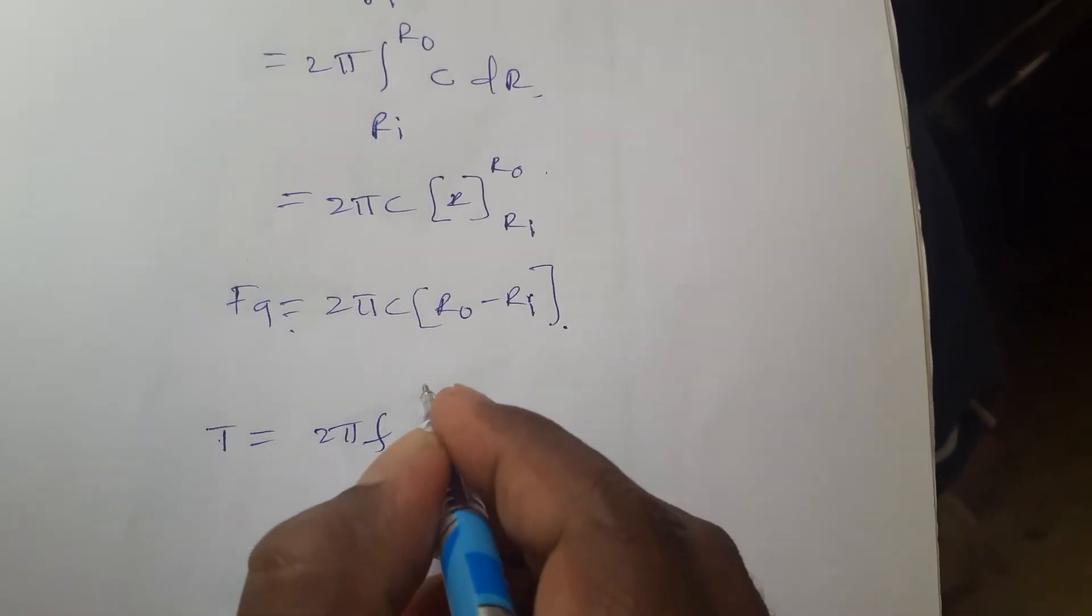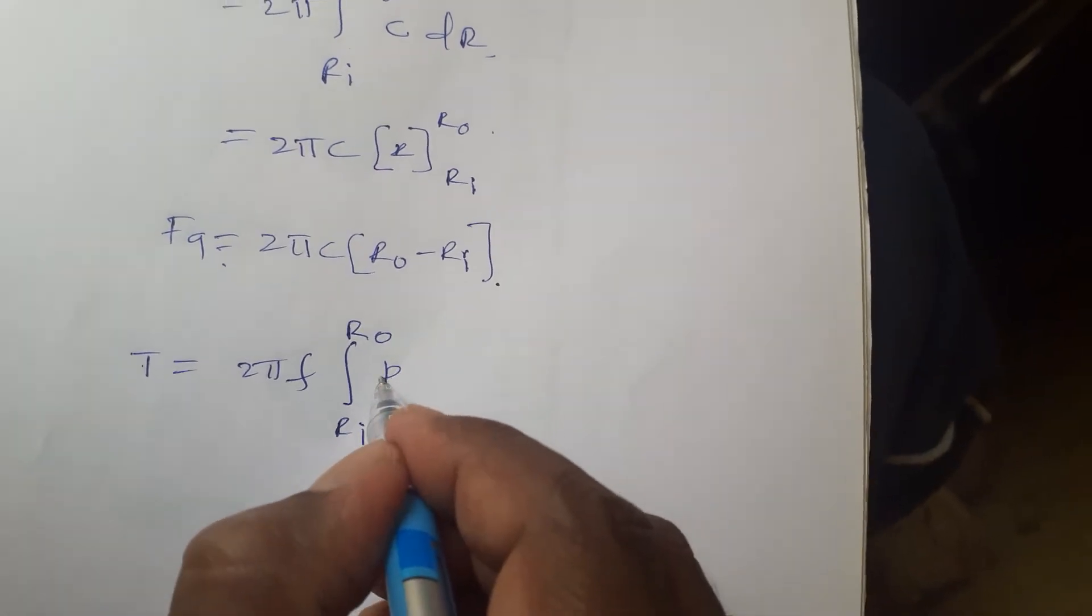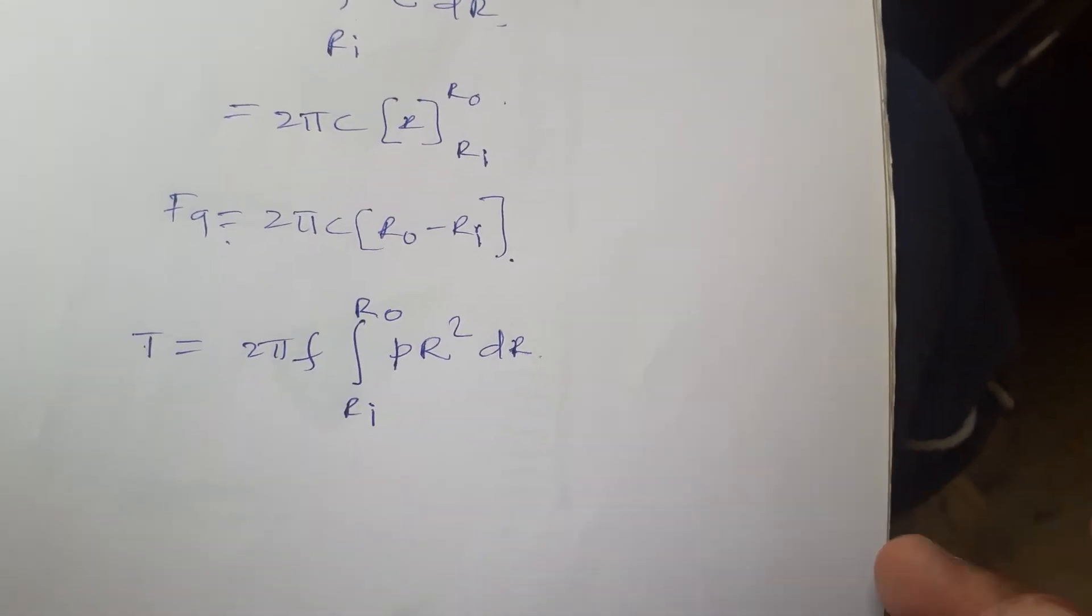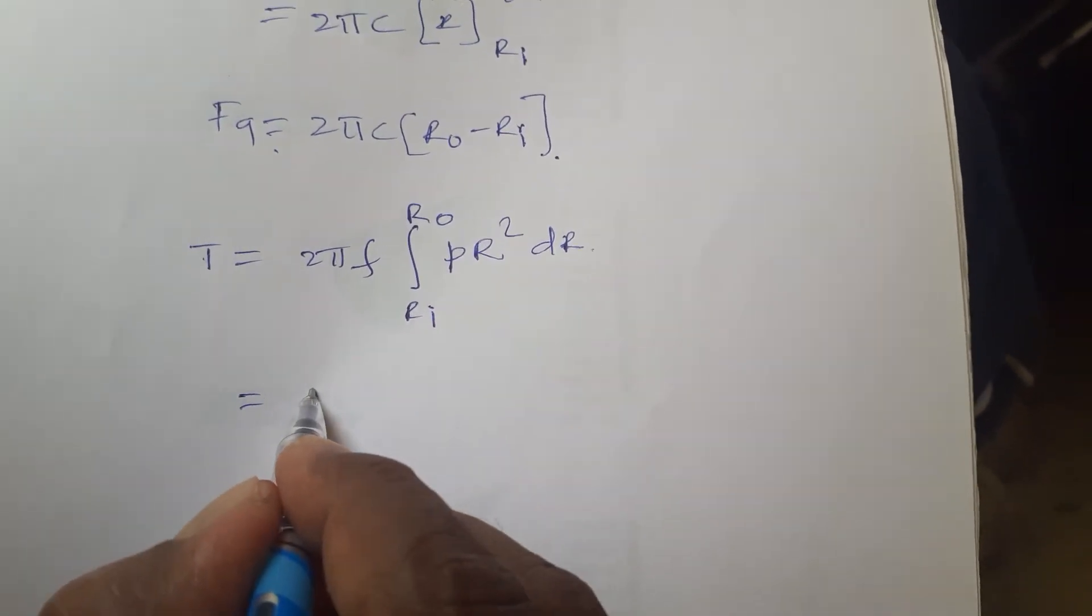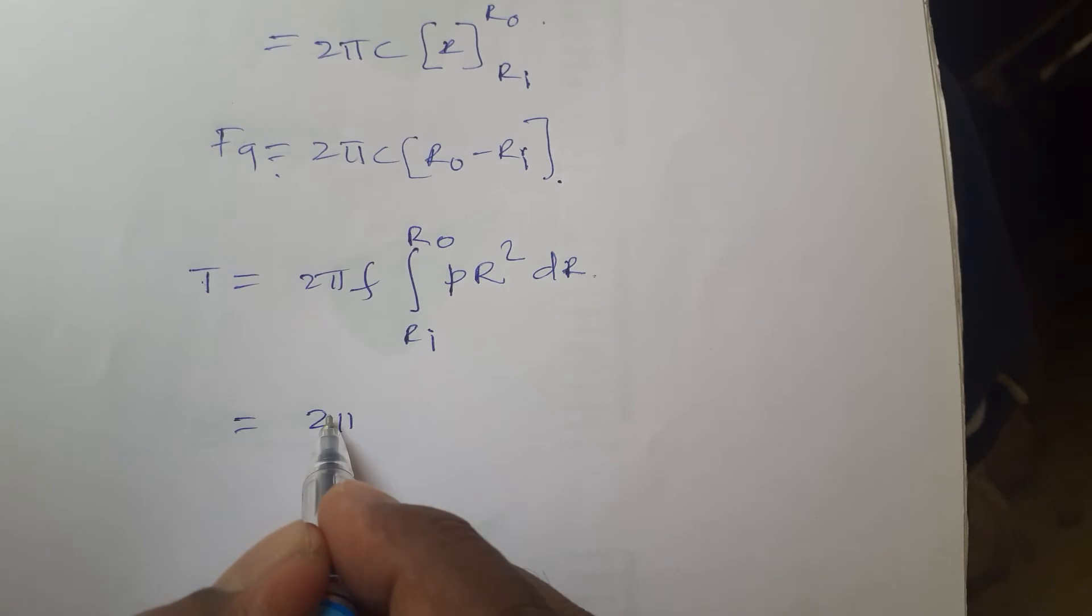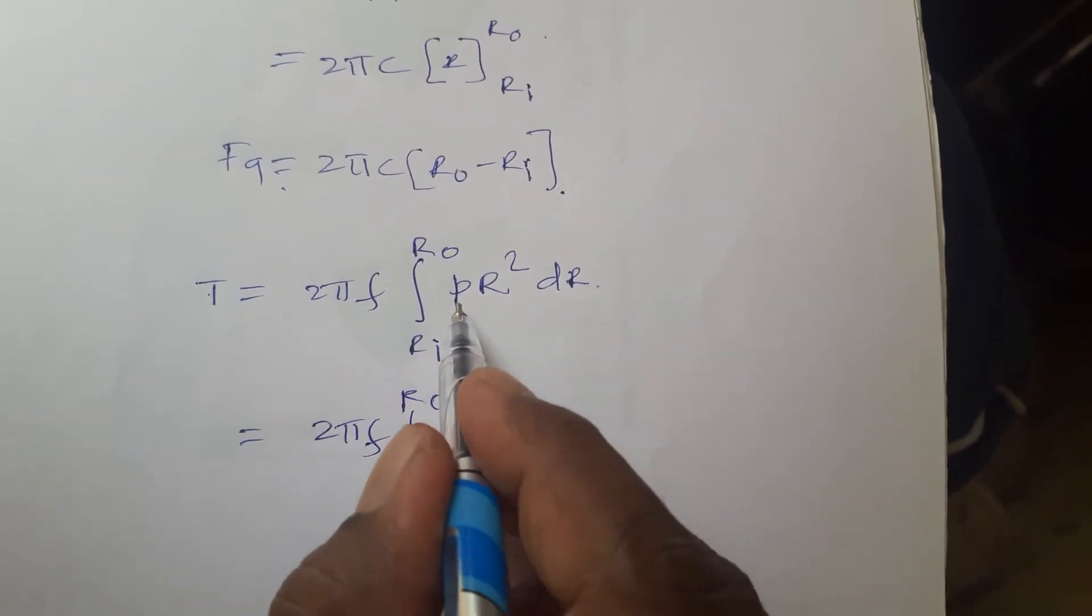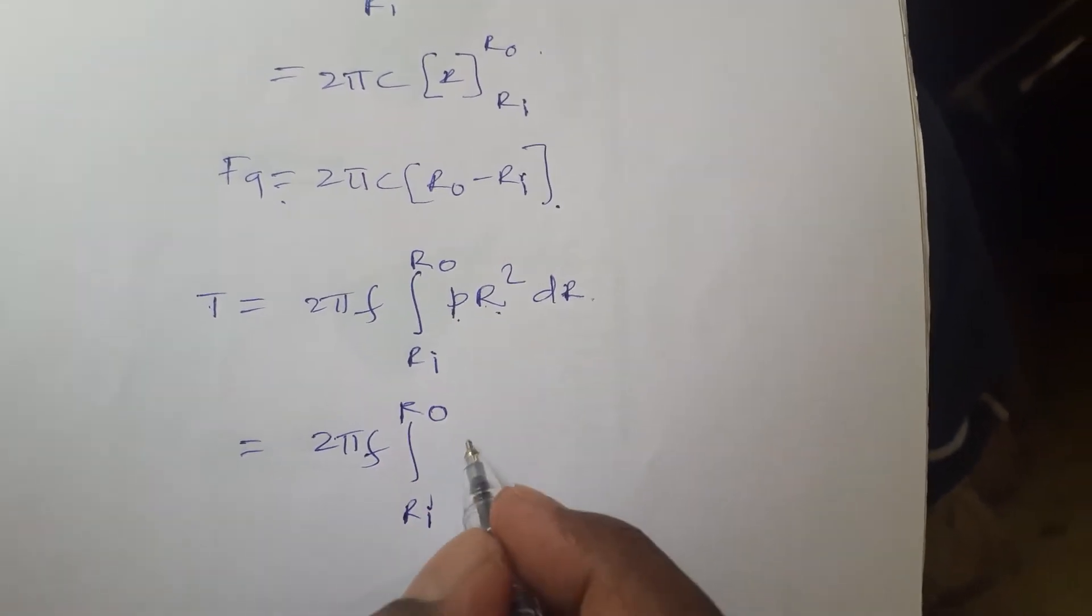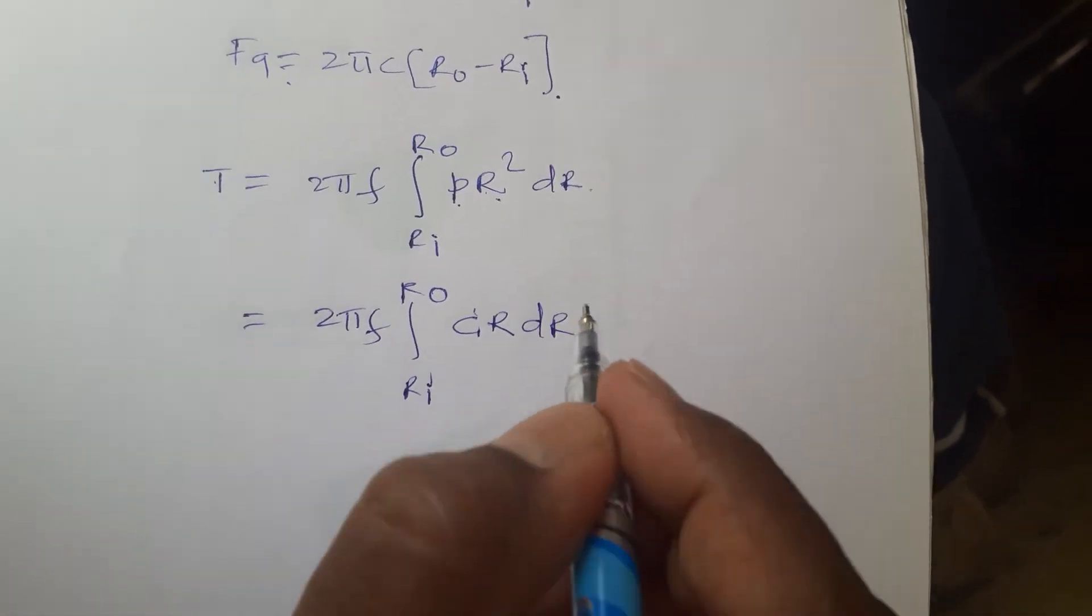The same way torque is equals to 2 pi F, Ri, R out. 2 pi F, Ri, R out. Pressure R square into dr. Now you know that once constant we can take it out. This will become 2 pi F, Ri, R out. Pressure P into C, sorry, P into R is what? Constant and one more R. dr. We can rewrite like this.